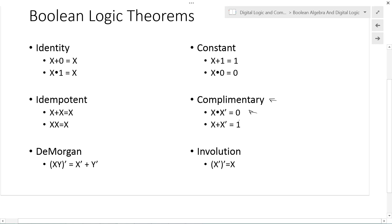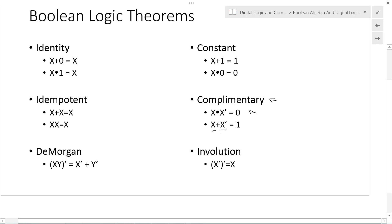For the OR operation: if x equals 1, x prime equals 0, so we OR 1 with 0. If x equals 0, x prime equals 1, so we OR 0 with 1. We are always ORing with 1, so we always get 1.